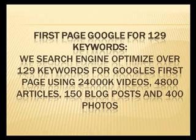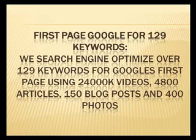We also include the first page of Google for 129 keywords. We search engine optimize over 129 keywords for Google's first page using 24,000 videos, 4,800 articles, 150 blog posts, and 400 photos.